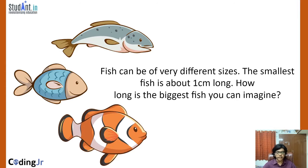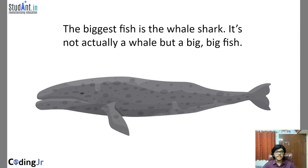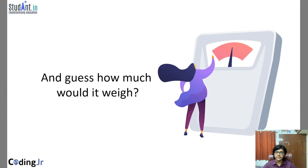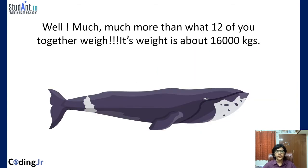Fish can be of many different sizes. The smallest is about one centimeter long. Can you take a guess about how long the biggest fish is? The biggest fish is a whale shark, which is not actually a type of whale but is a kind of fish. It is 18 meters in length — that's like 12 children your age standing on top of one another. Its weight is around 16,000 kilograms, which is much more than the weight of 12 children.